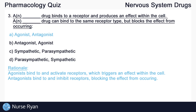The answer here is A: an agonist drug binds to a receptor and produces an effect within the cell, and an antagonist drug can bind to the same receptor type but blocks the effect from occurring.